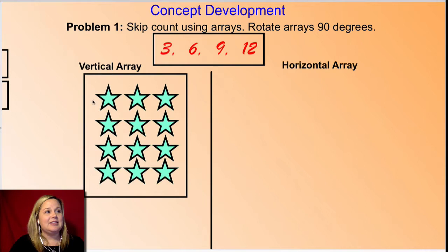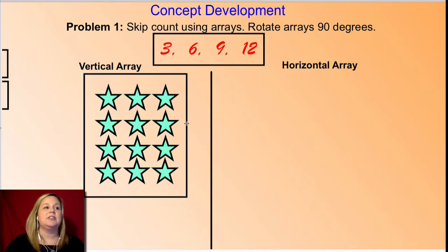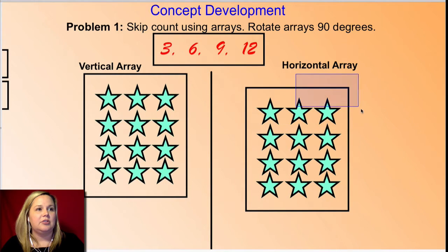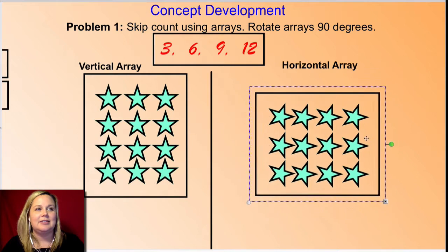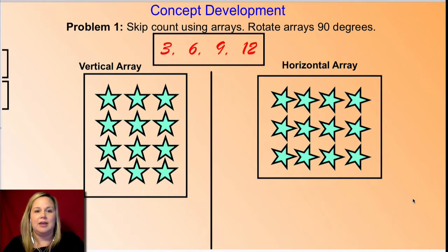Here's mine. My vertical array goes up and down. I see there are four rows — rows go side to side — one, two, three, four. And then there are three in each row: one, two, three. Now take your board and rotate it 90 degrees to turn it sideways. As I do that, my array is now horizontal. Looking at it again: there are now three rows that go side to side and four columns that go up and down.